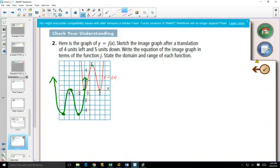Again, it's asking us to write the equation of the image in terms of the function j. So it's the same language that we saw in our first example.